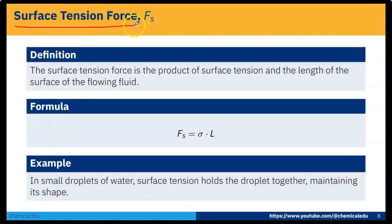Next one is surface tension force Fs. The surface tension force is the product of surface tension and the length of the surface of the flowing fluid. So here is the formula: Fs equals σ into L.